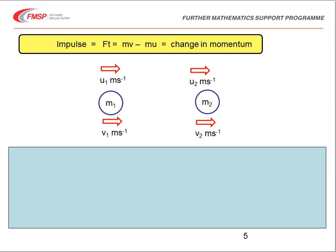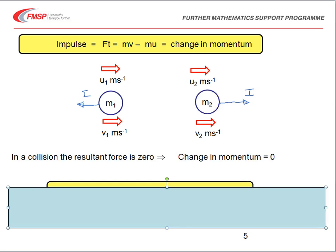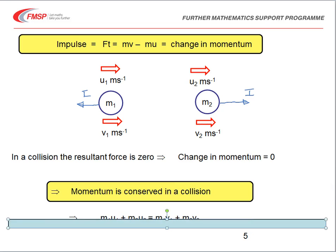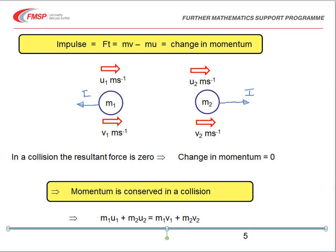M1 experiences an impulse in one direction, and M2 experiences an equal and opposite impulse. If the impulses are equal and opposite, the resultant force multiplied by time is zero, and therefore the change in momentum is zero. Momentum is conserved in a collision, giving us the well-known equation: M1U1 plus M2U2 equals M1V1 plus M2V2.